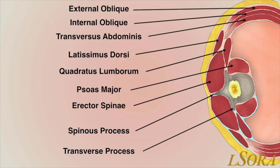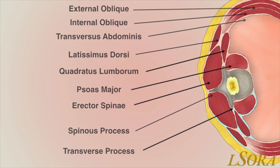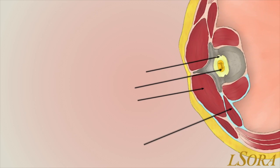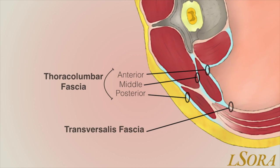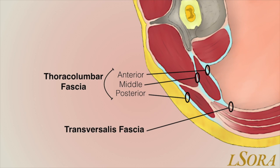This transverse or axial slice of the abdominal wall is a useful way to examine the relationship between the muscles of the anterolateral abdominal wall and the posterior abdominal wall. We can focus on the muscles psoas major, quadratus lumborum, and erector spinae. Let's review the fascia around the QL muscle.